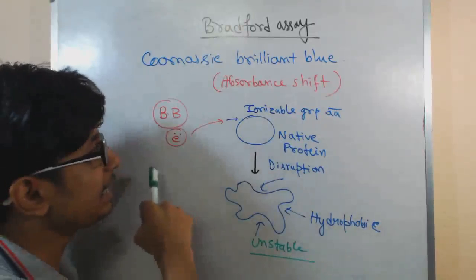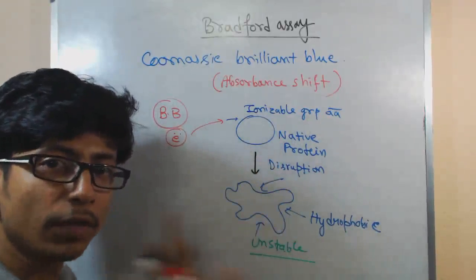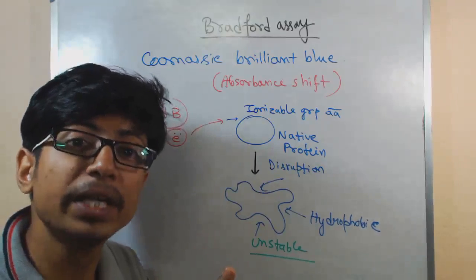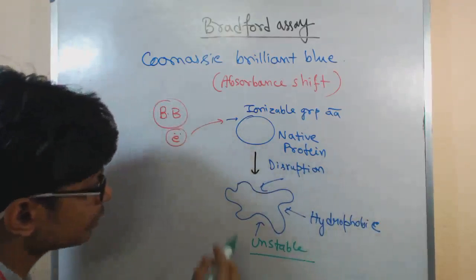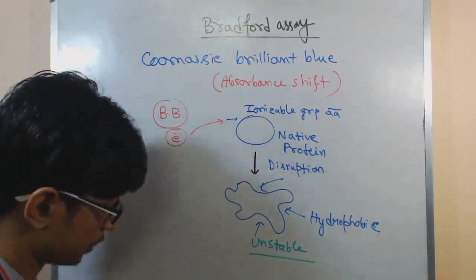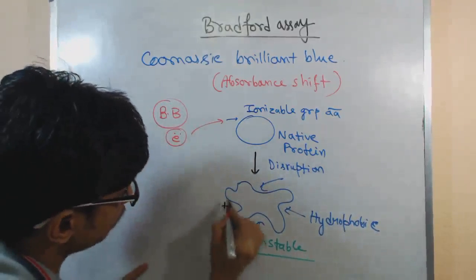It is interacting with the protein and makes it unstable. Now both of them are unstable. They can pair with themselves using ionic bond. How? Now this protein, all the amino acids that are present with positive amino groups, the amino groups that are positive here, using those groups, this protein is interacting with all the negative groups that are present in brilliant blue dye.